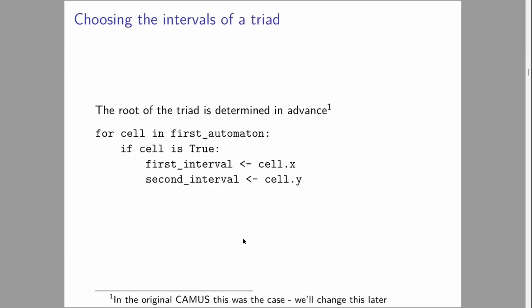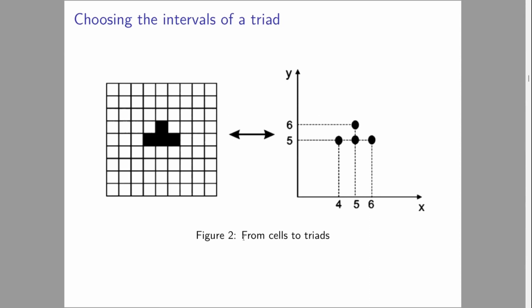Some pseudocode here. In original CAMU, the root of a triad is determined in advance. We loop through every cell in the first automata. If that cell is set to true, then we make a triad. The first interval of a triad will be the x position of the cell, the second interval will be the y position. Here's a diagram to explain that. We have our grid, we loop through, and black squares are set to true. That bottom left one has x position four and y position five. So we have our fundamental, go up four semitones to the first interval and five semitones to the second interval.